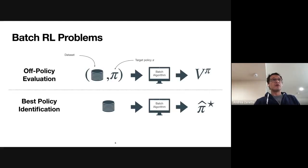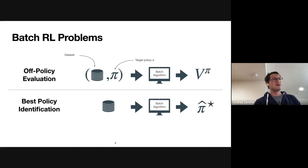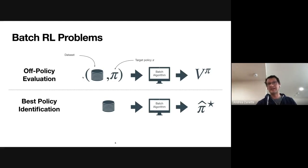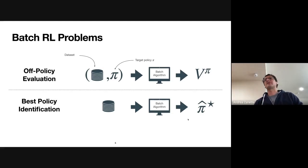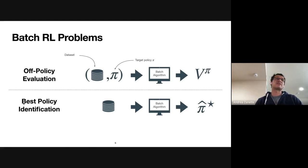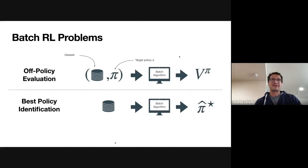There are two fundamental batch reinforcement learning problems. One is off-policy evaluation and the other is best policy identification. In off-policy evaluation, the agent is given a dataset collected by some procedure and a target policy, and the batch algorithm must predict the value of this target policy. In best policy identification, you use the batch dataset to identify a near-optimal policy.